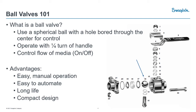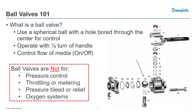One thing we want to cover is what ball valves are not for. They're for on-off and isolation. A ball valve is really not great for pressure control — once you start opening that ball a little bit, you pretty much have full pressure quickly because of its shape. It doesn't have any shape inside for metering, throttling, or pressure control. Also not great for pressure bleeder relief: it's going to dump your system really fast, which might be bad for your system.